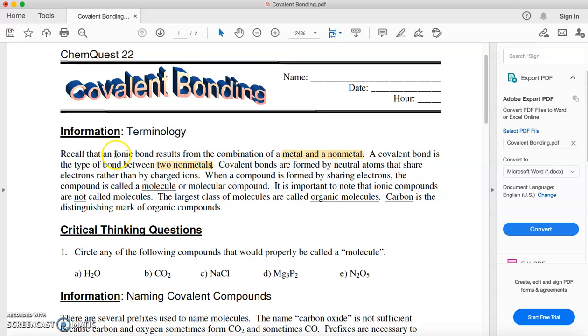Metal, non-metal: ionic. Covalent: two non-metals. Covalent bonds are formed by neutral atoms that share electrons rather than by charged ions. When a compound is formed by sharing electrons, the compound is called a molecule or a molecular compound. It is important to note that ionic compounds are not called molecules. Remember, they're called formula units. The largest class of molecules are called organic molecules. Carbon is the mark of an organic compound.